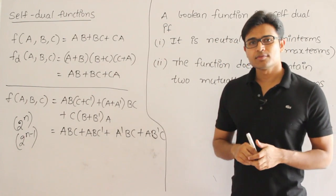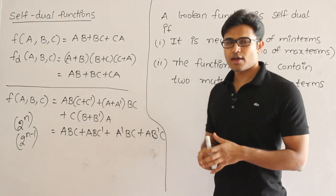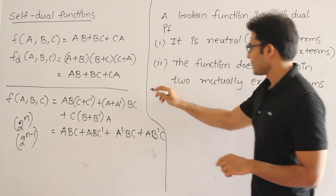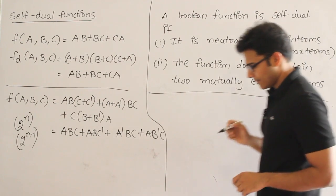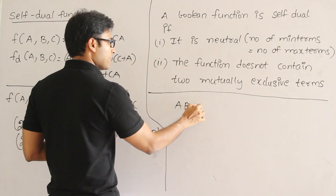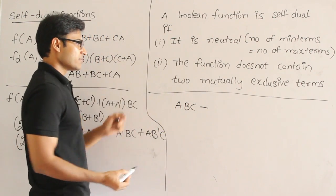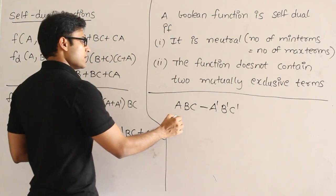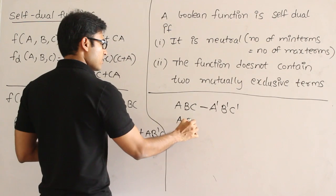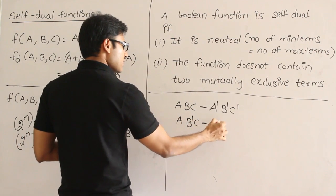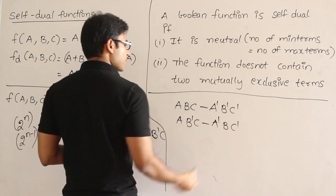And second thing is, there is something called as mutually exclusive terms. If I have a minterm, a mutually exclusive term can be obtained like this. Say, I have a minterm like this. The minterm I have is ABC. Then mutually exclusive term for this minterm is A prime B prime C prime. Similarly, if I have the minterm A B prime C, then the mutually exclusive term for this is A prime B C prime.